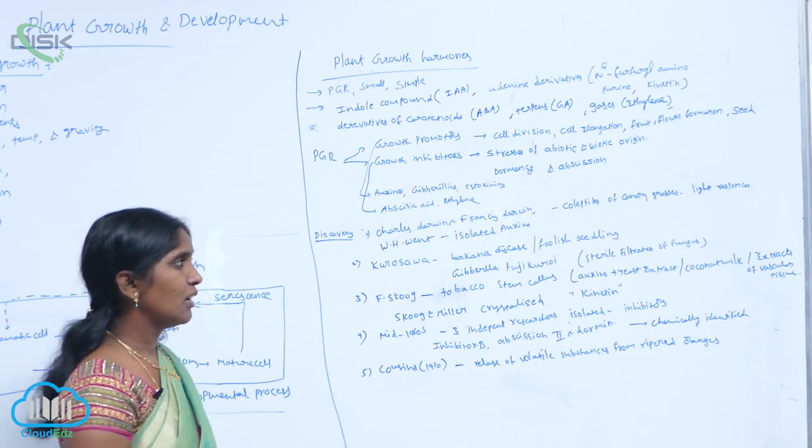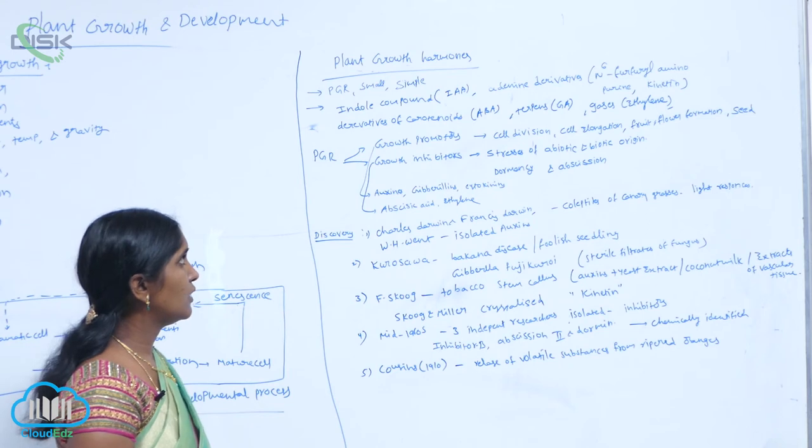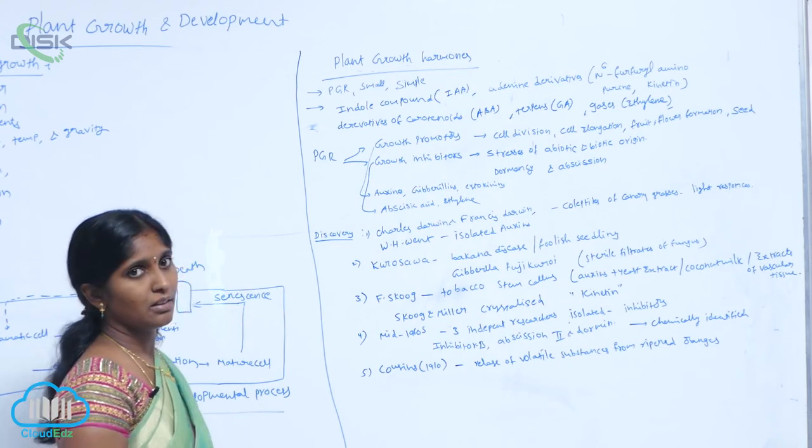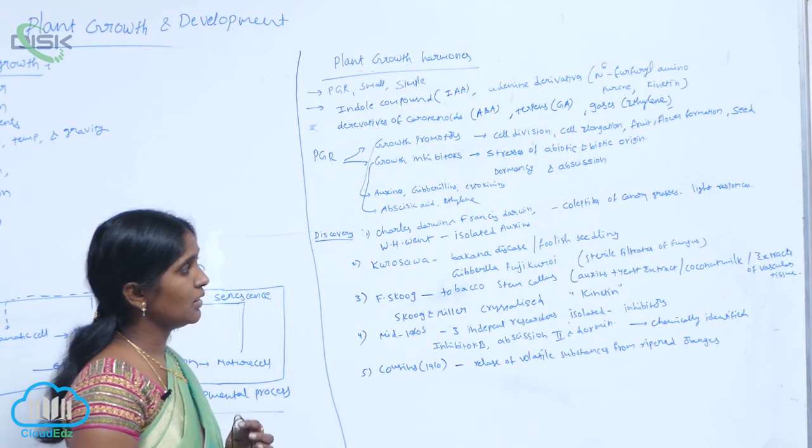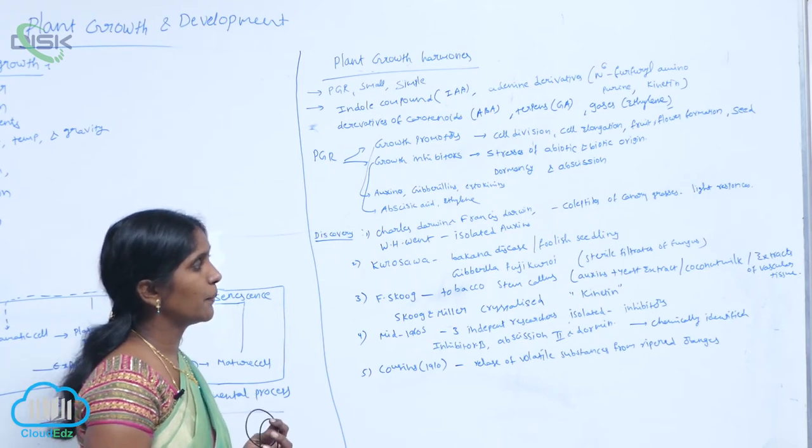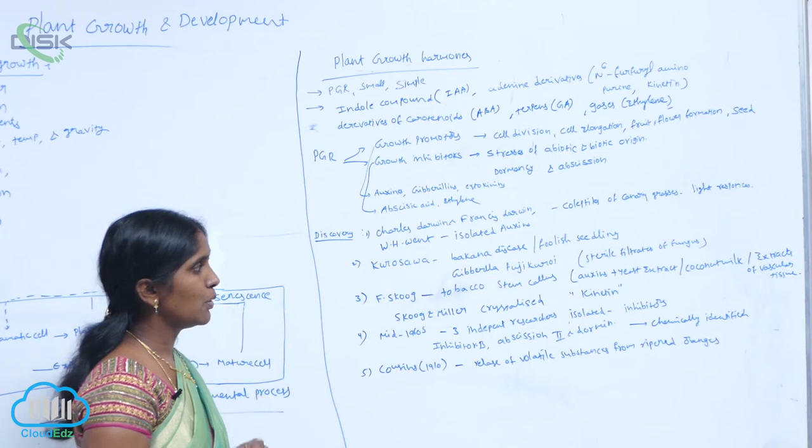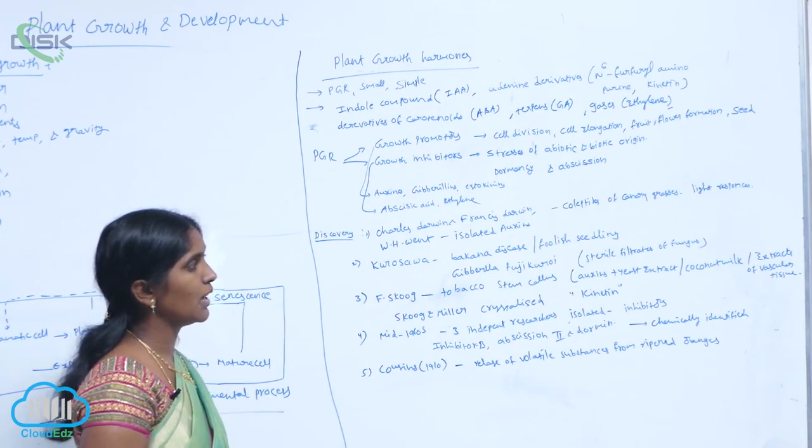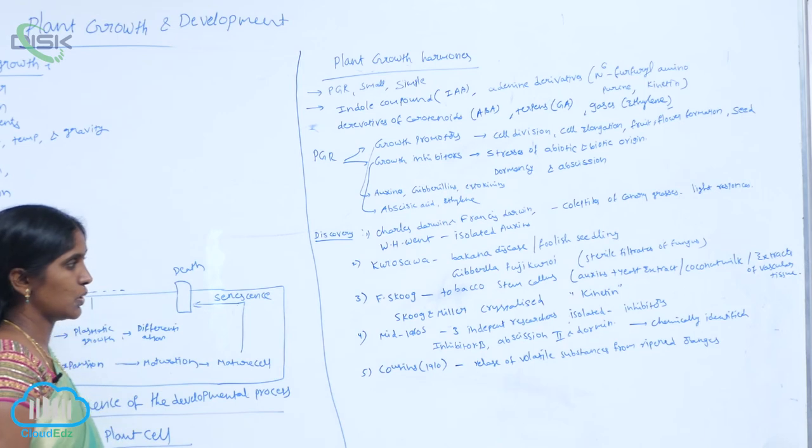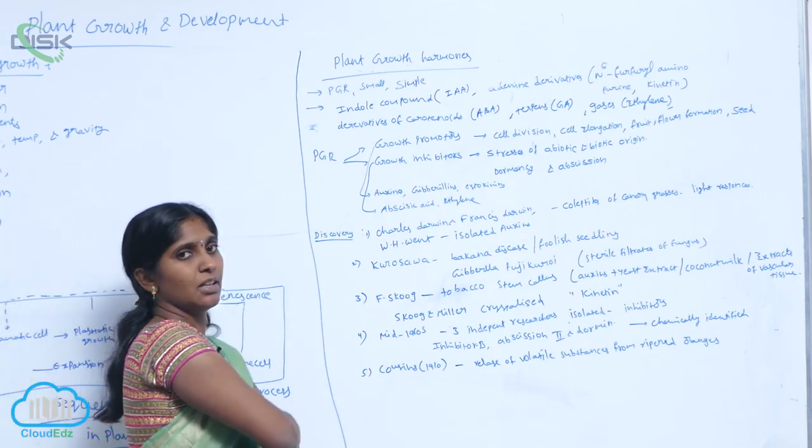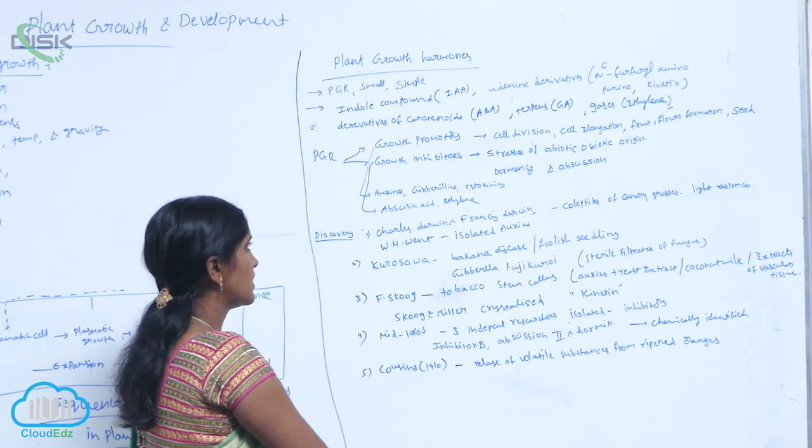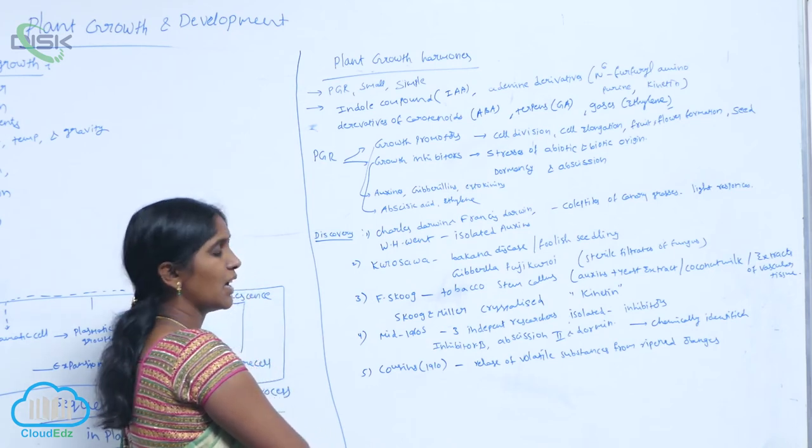That resulted in organogenesis. He concluded that the material which caused growth promotion and organogenesis is present in three of the compounds: yeast extracts, coconut milk, and extraction of vascular tissues. Later, Skoog and Miller crystallized the cytokinin, that is kinetin.